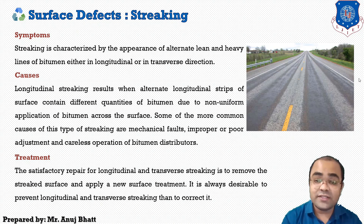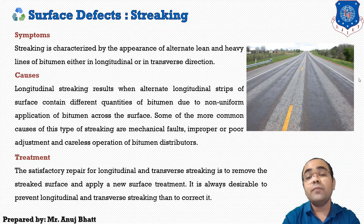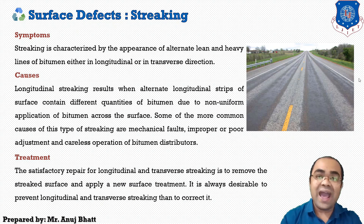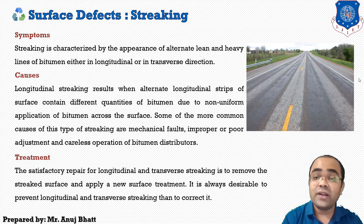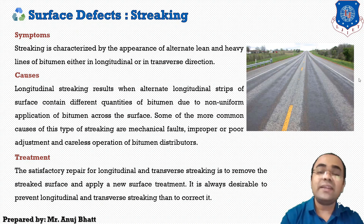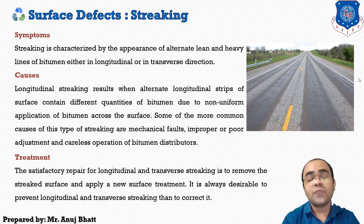Some common causes of this type of streaking are mechanical faults, improper or poor adjustment, and careless operation of bitumen distributors. These streaks can also be formed as a result of applying the bituminous binder at too low a temperature — a temperature at which the bitumen is not fluid enough to fan out properly from the nozzle on the spray bars.